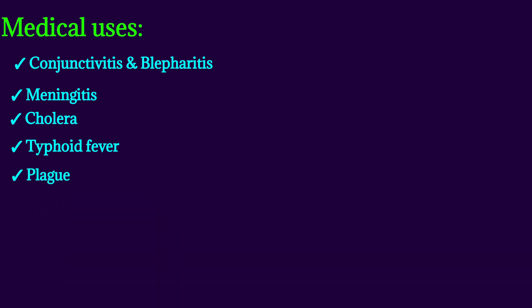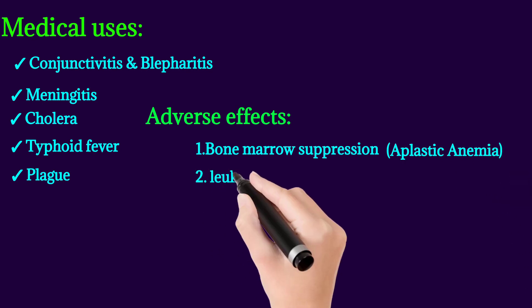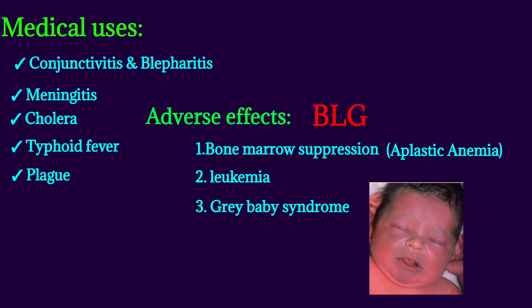Adverse effects: bone marrow suppression, which occurs as a result of inhibiting mitochondrial protein synthesis in eukaryotic cells of the human body. It can also cause aplastic anemia, leukemia, and gray baby syndrome. Gray baby syndrome also occurs as a result of inhibiting mitochondrial protein synthesis. The mnemonic to remember: B for bone marrow suppression, L for leukemia, and G for gray baby syndrome.